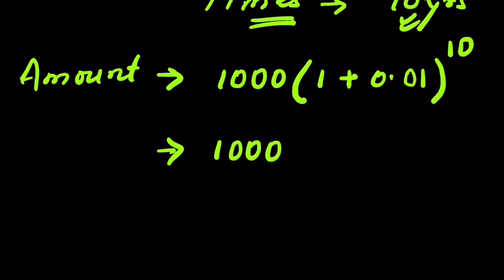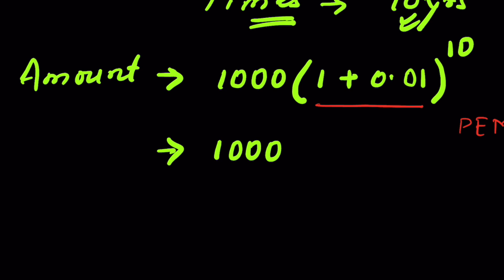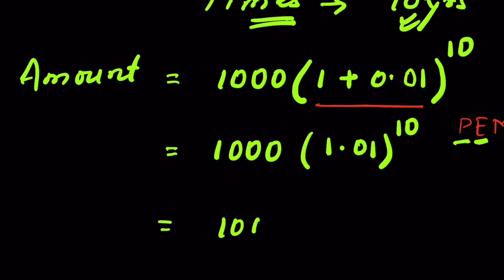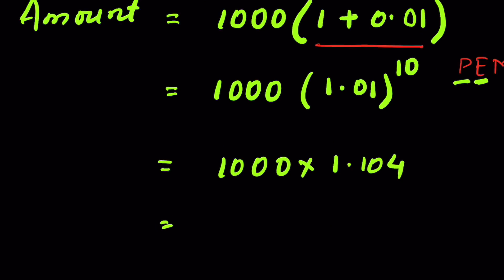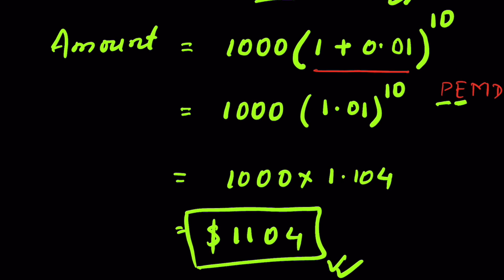We follow PEMDAS: first solve the parenthesis — 1 + 0.01 = 1.01 — then the exponent. Using a calculator, 1.01 to the power of 10 equals approximately 1.104. Multiply that by 1,000 and we get $1,104. This is the amount you will receive at the end of 10 years at 1% compound interest.